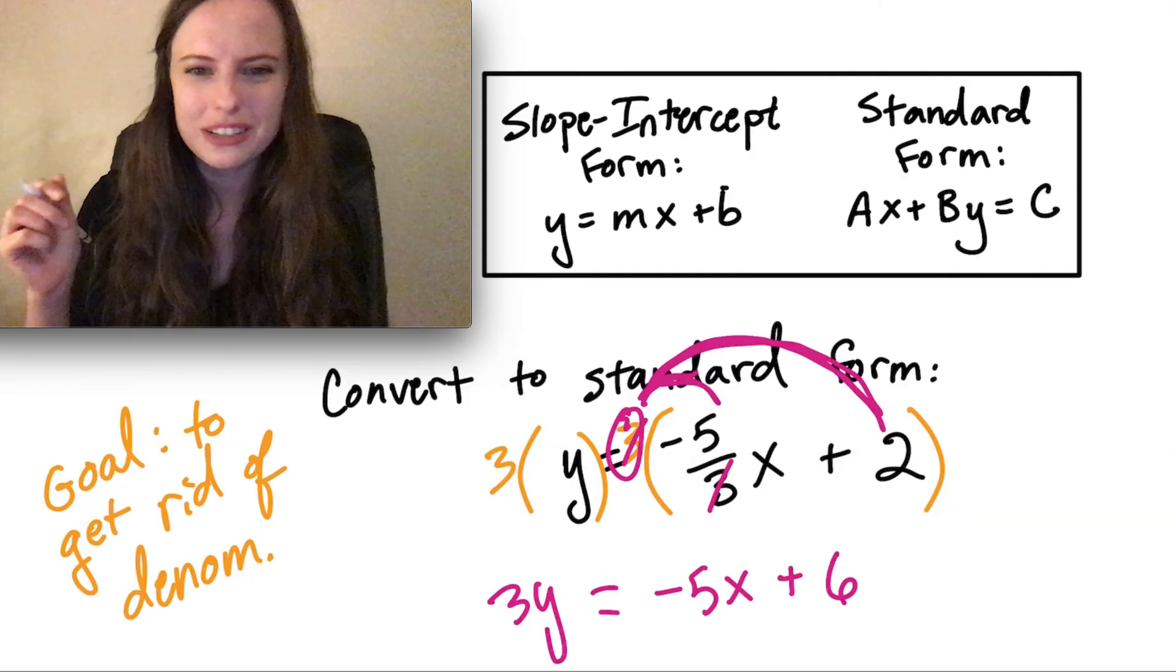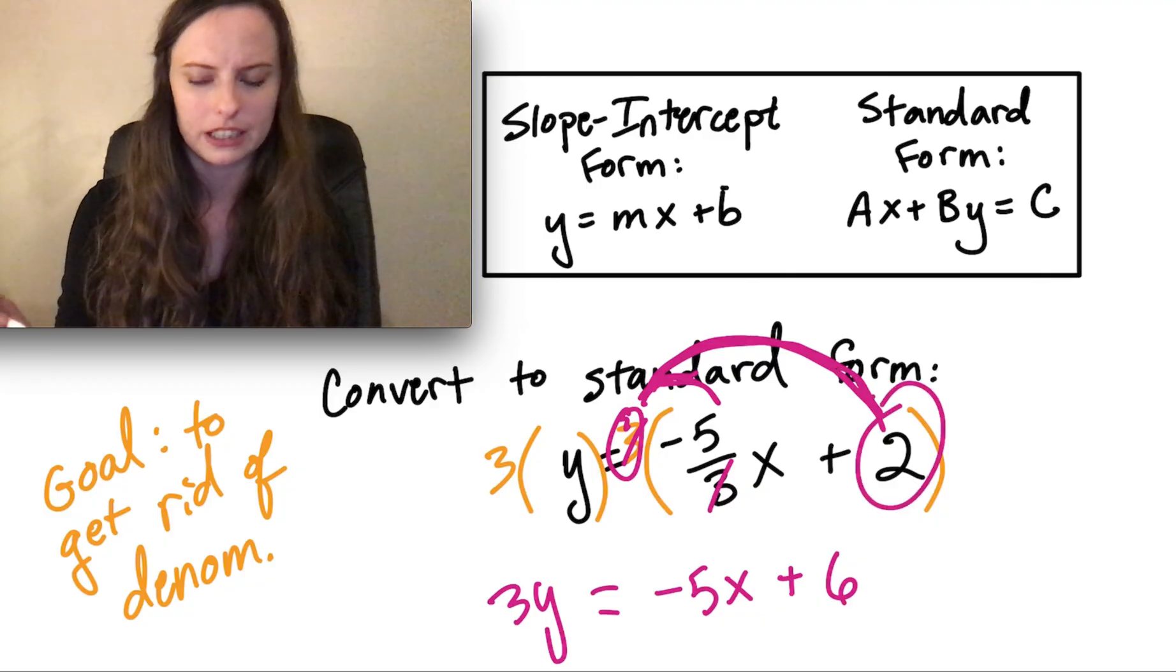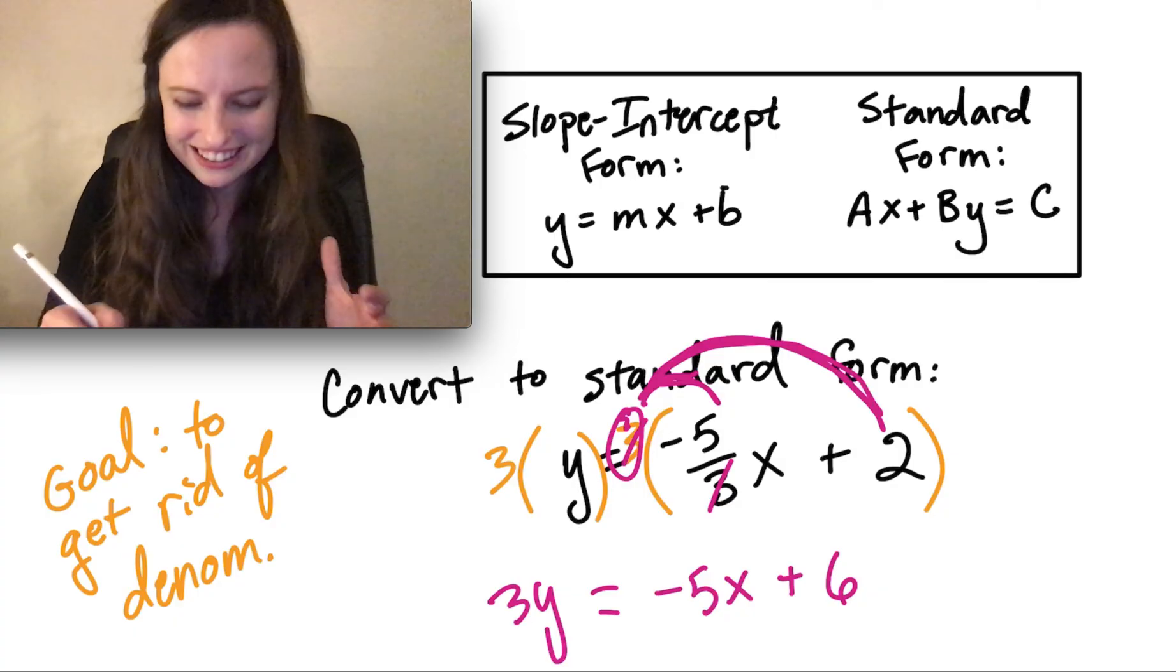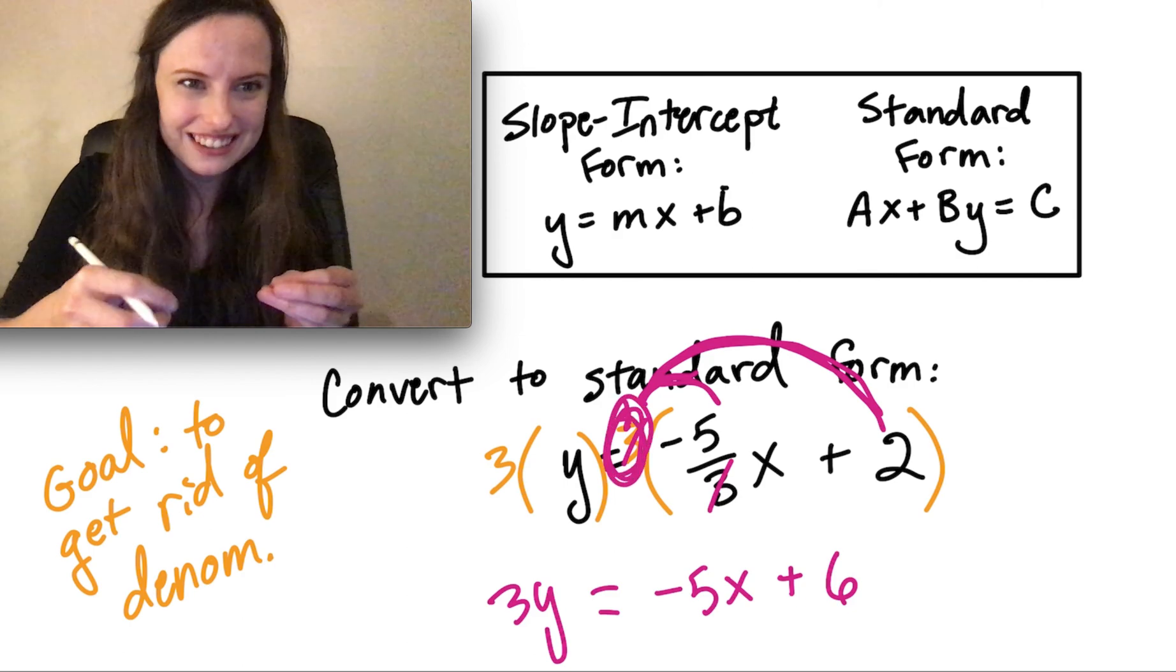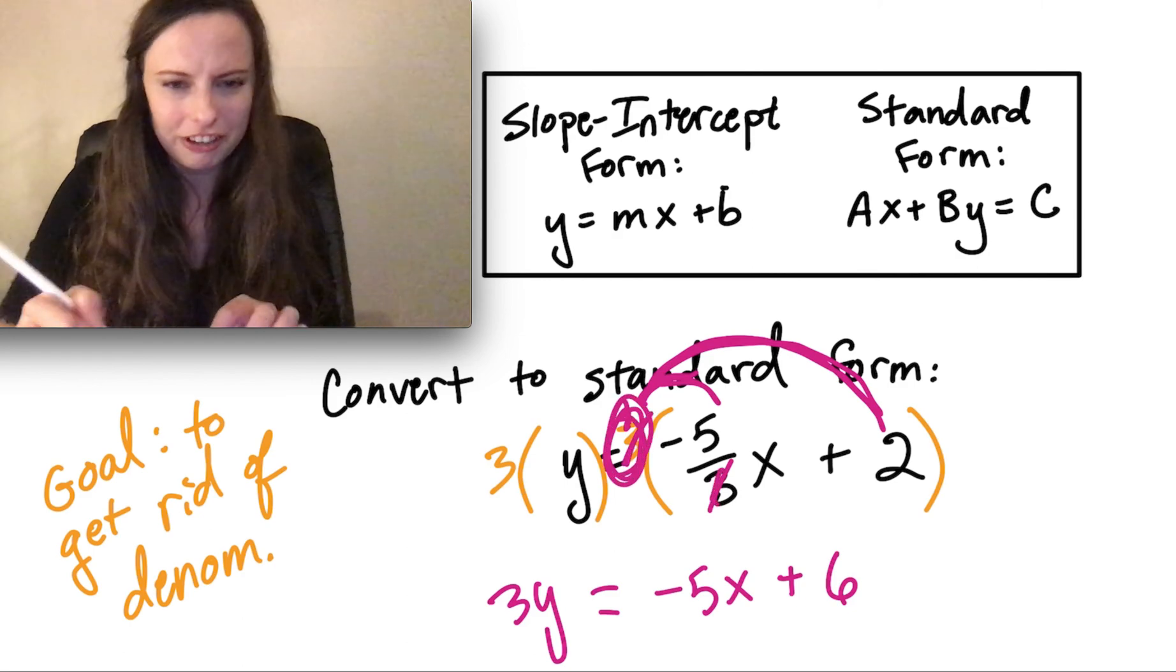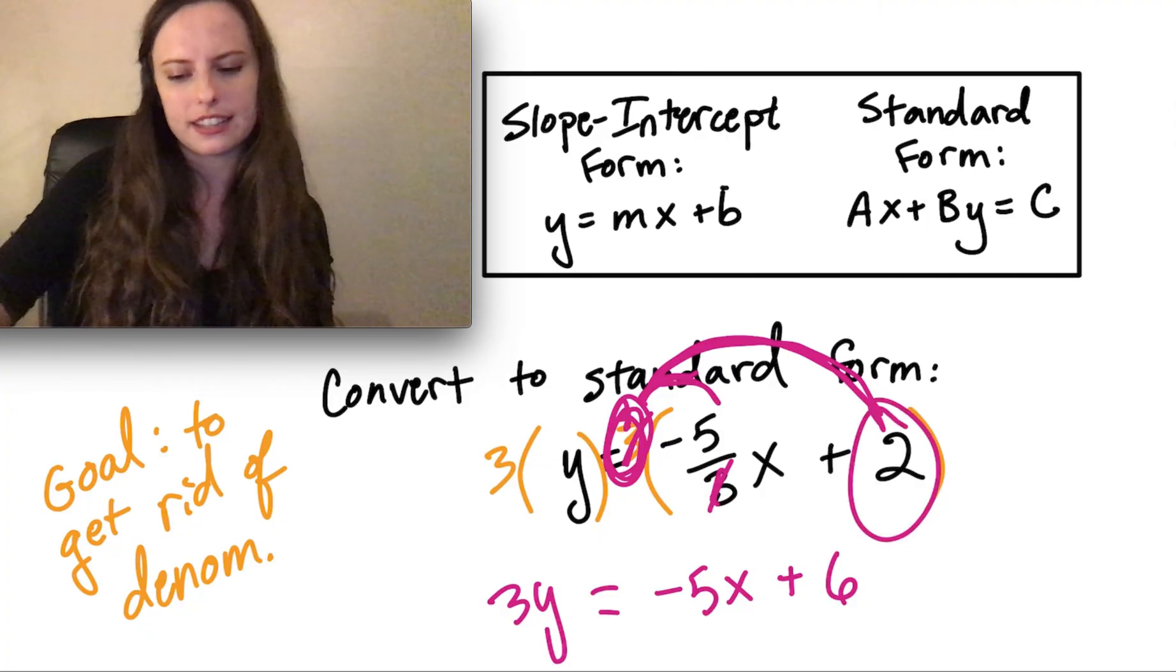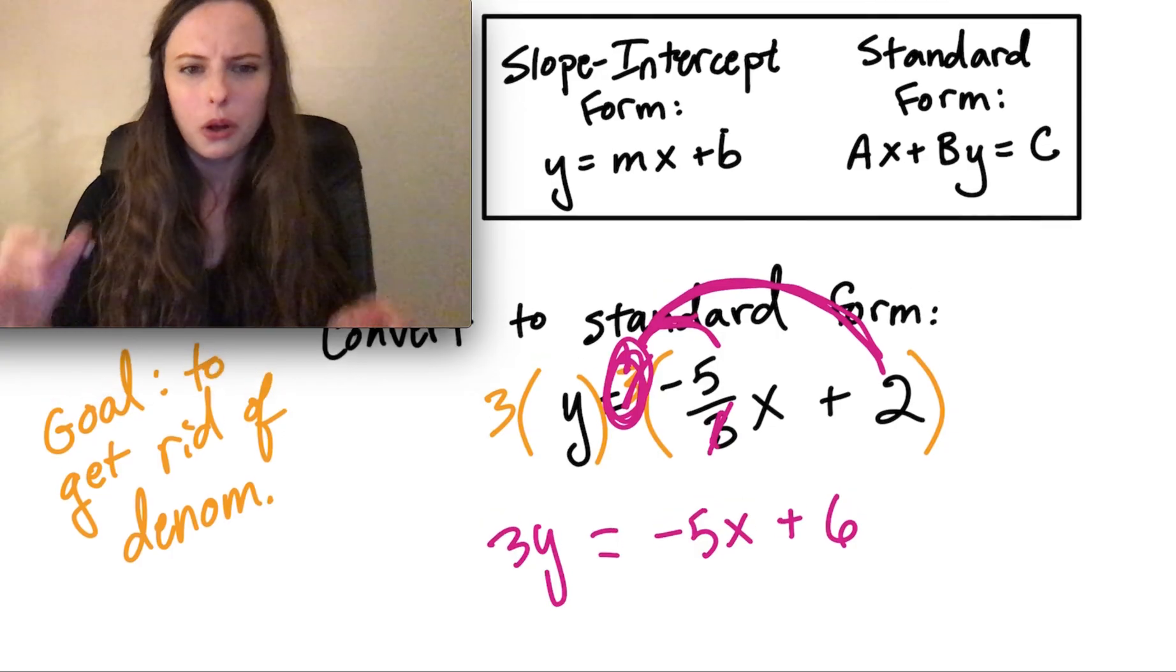It's really, really easy to forget to distribute to that second number in the equation. Because we get so excited about canceling out the 3s that we forget that it's not completely canceled out. It canceled here with the fraction, but that 3 still gets multiplied a second time by that second number. So don't forget about that important step. Now that we're here...